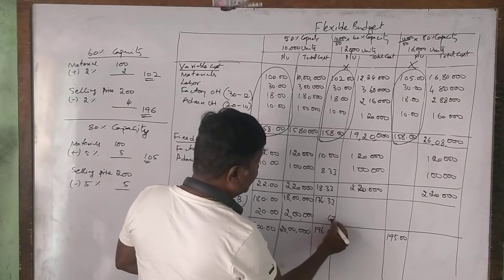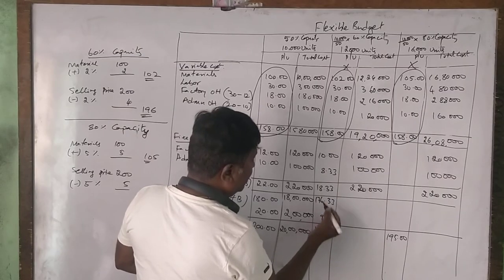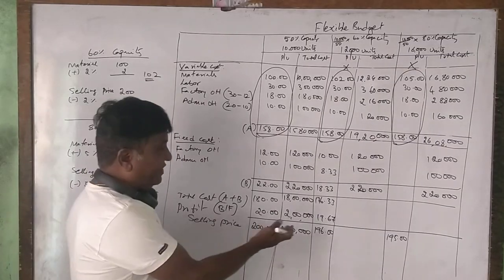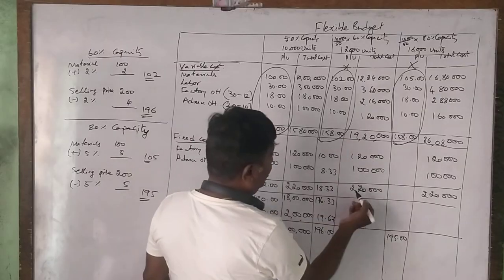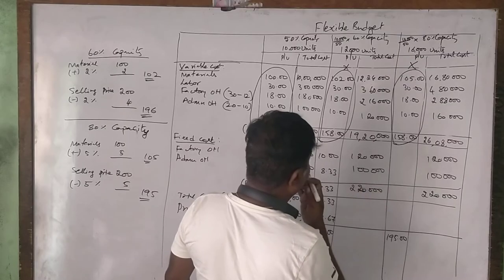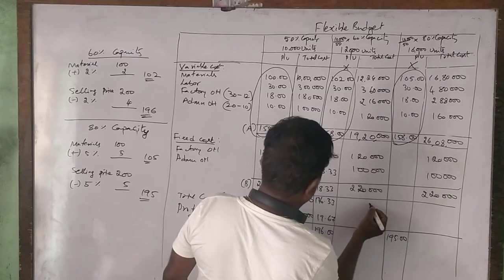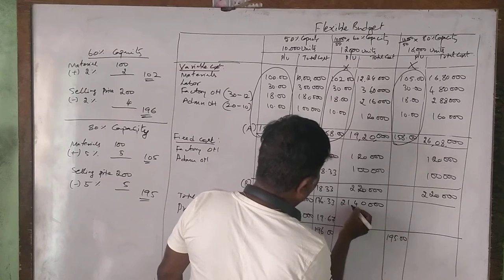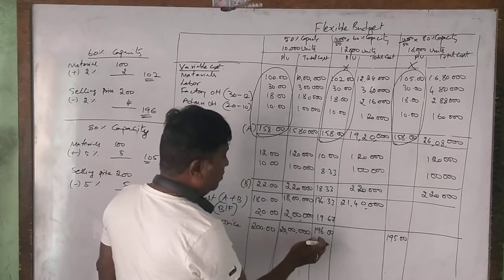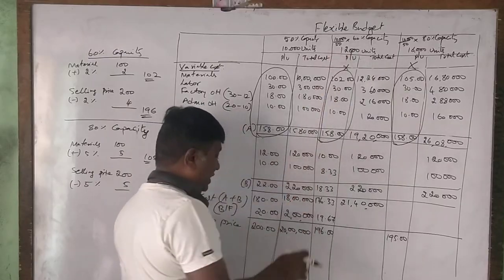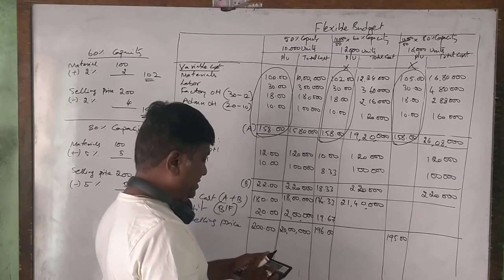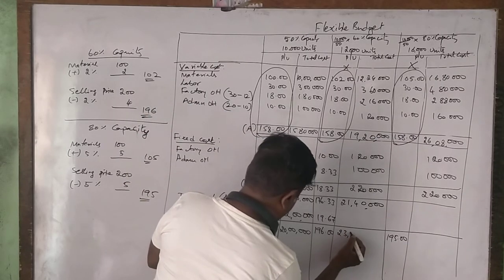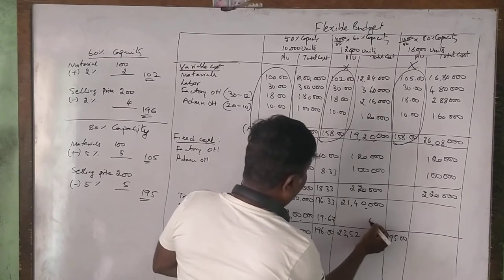At 60% capacity profit: selling price 196 rupees minus total cost 176.33 rupees = profit per unit approximately 19.67 rupees. Total profit = 19.67 × 12,000 = approximately 2,36,000 rupees. This is the difference in profit between the capacity levels.